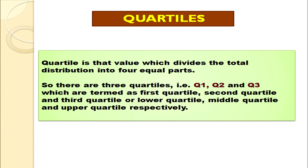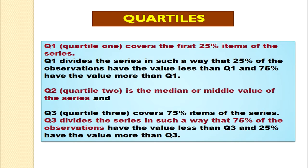Now, what is a quartile? A quartile is that value which divides the total distribution into 4 equal parts. So there are 3 quartiles — Q1, Q2 and Q3 — which are termed as 1st quartile, 2nd quartile and 3rd quartile, often known as lower quartile, middle quartile and upper quartile respectively. Q1, the 1st quartile, covers the first 25% of the items of the series. So Q1 divides the series such that 25% of the observations have a value less than Q1 and 75% have a value more than Q1.